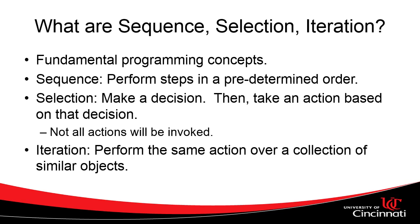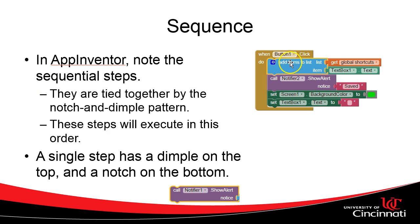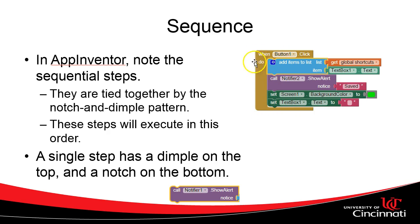So let's start with sequence. Sequence in App Inventor is going to be a series of steps. Each step has a shape with a curved end, a little dimple on the top, and a little notch on the bottom, meaning we can tie them together. The notch hooks to the dimple of the next step. We have an event handler that executes four steps in order: add an item to a list, call the notifier to show it's saved, change the background color of the screen, and reset the text box to blank. This series of steps must happen in a specified order.